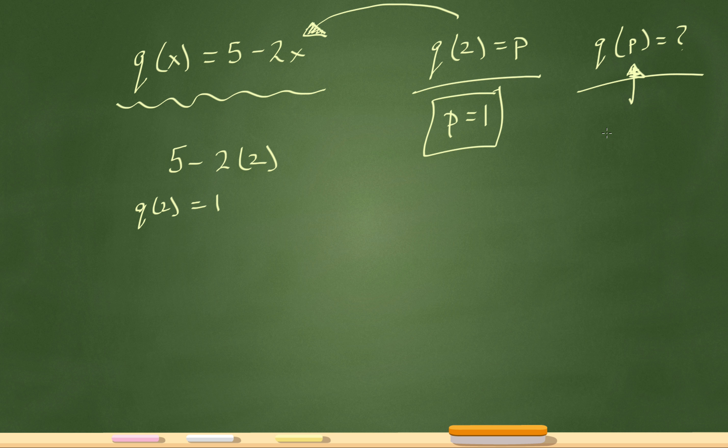Now going back to the final question, it's saying q of p and I know q of p is 1 so it's really q of 1. And now let's go back to this original function. It's saying go to your function of q which is 5 minus 2x and plug in 1 for your x.